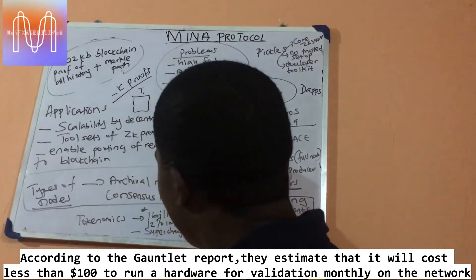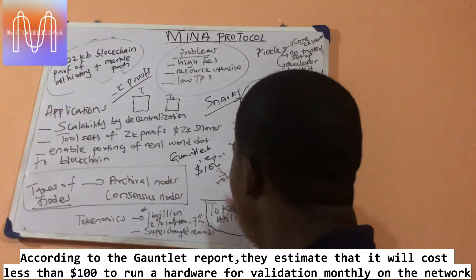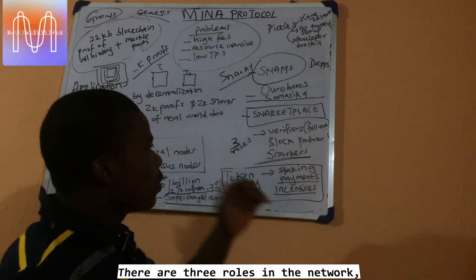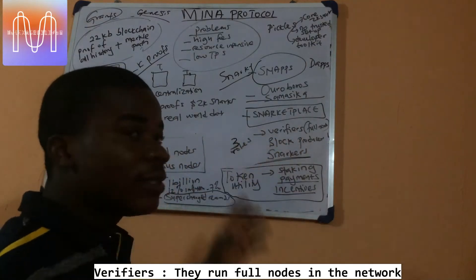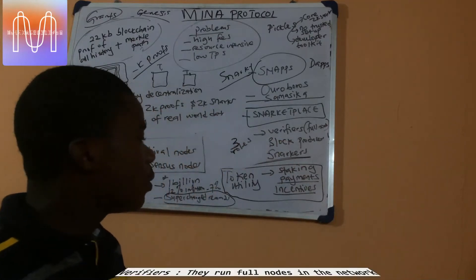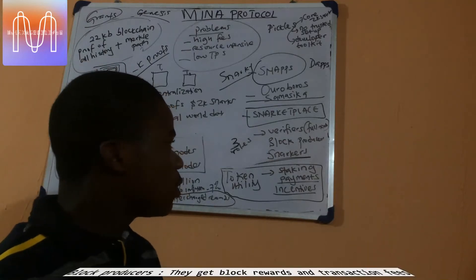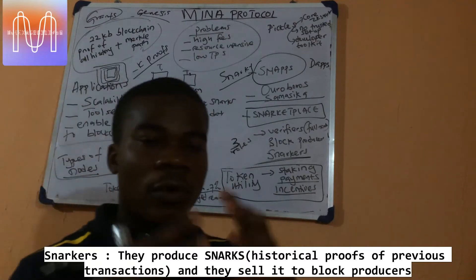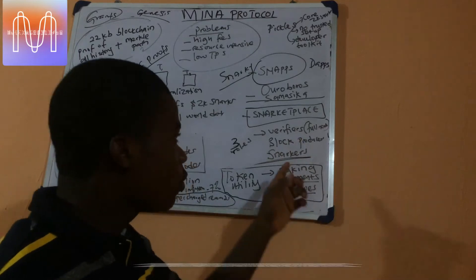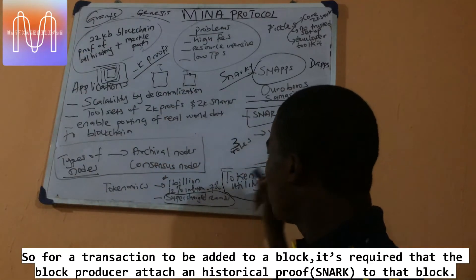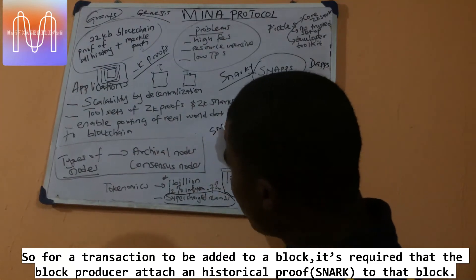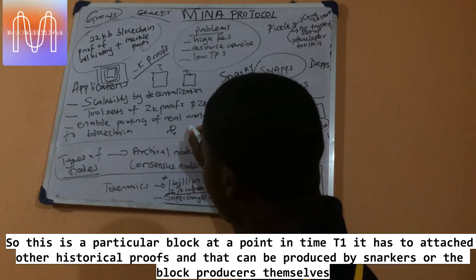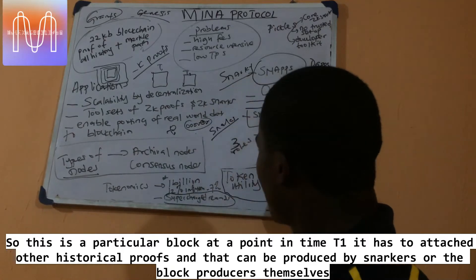It is estimated that it will take less than around one hundred dollars per month to be a provider on this network, so it is very accessible — you just need a basic device. There are three roles on the network: verifiers, who verify everything on the network like full nodes and earn rewards; block producers, who earn block rewards and transaction fees; and snarkers, who produce Snapps or historical proofs of what has happened in the system. Each transaction added to a block requires the block producer to attach a historical proof produced by snarkers.